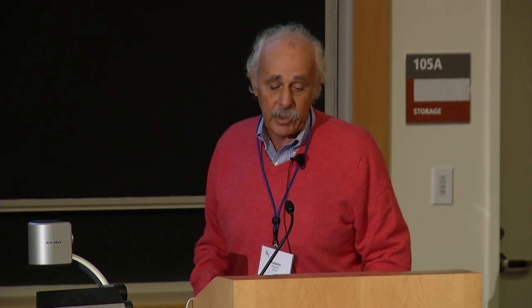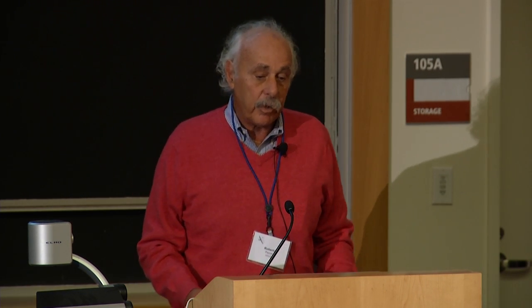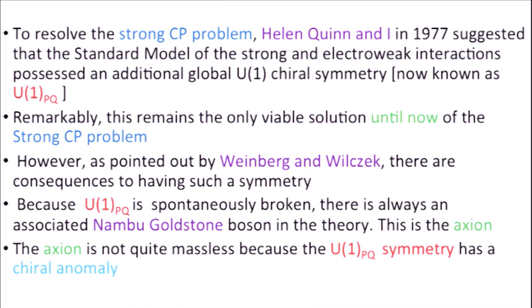It turned out that at that time, Helen Quinn and I figured out a solution: in the standard model, if you added an extra symmetry — an extra global chiral U(1) symmetry, now called U(1)_PQ — then there is a solution to this problem. You can rotate this theta parameter to zero. And what is amazing is that this is still the only viable solution, 36 years later, to this problem.